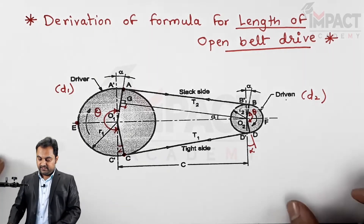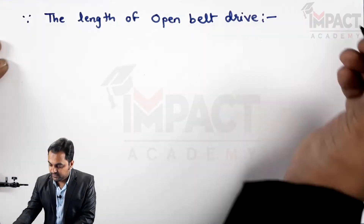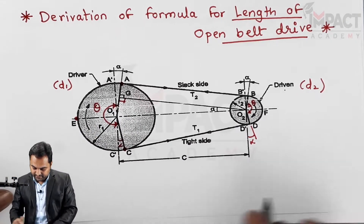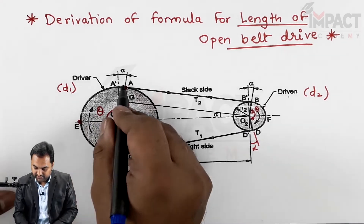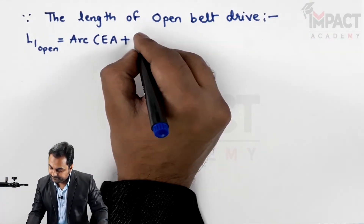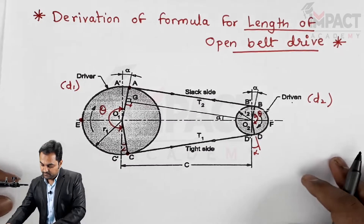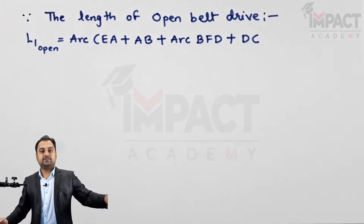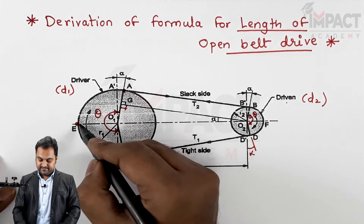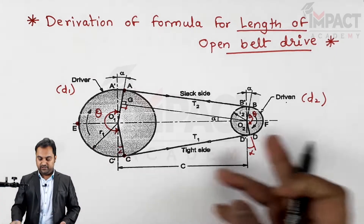In order to find the length of this open belt drive, the total length is given by looking at the diagram: arc CEA, plus line A to B, plus arc BFD, plus length D to C. I'll divide this formula into half — instead of going for the complete arc CEA, I'll write arc CEA, then AB, and arc BF.